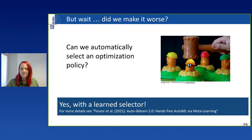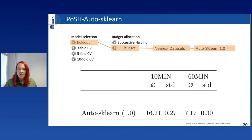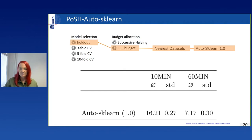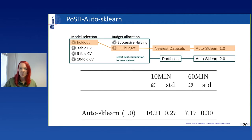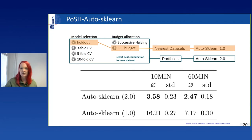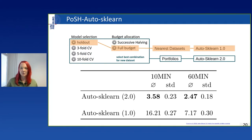Let me jump to a comparison. AutoSkLearn 1.0 uses holdout, evaluates everything on the full budget, and uses the nearest datasets. AutoSkLearn 2.0 uses the selector and portfolios to warm-start optimization. Here are results from our work showing the average balanced regret across 39 datasets from the AutoML benchmark for two time horizons — 10 minutes and 60 minutes. The longer you run the tool, the better it gets. And AutoSkLearn 2.0 is significantly better because it achieves a lower regret.